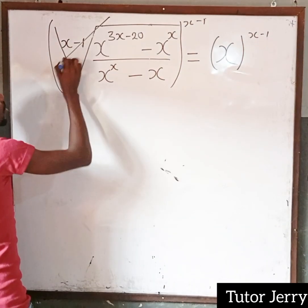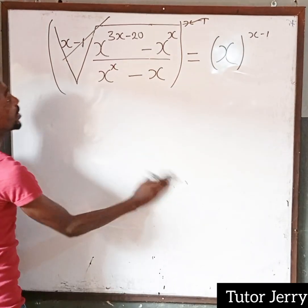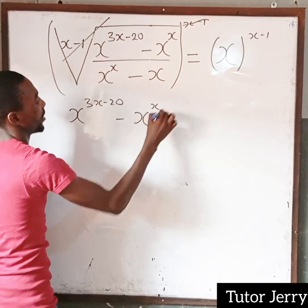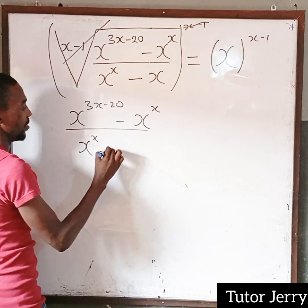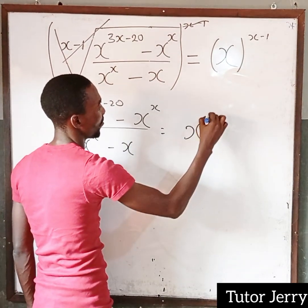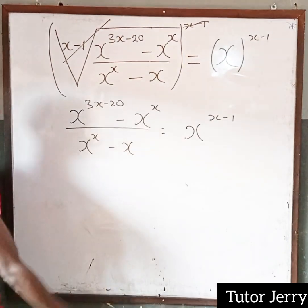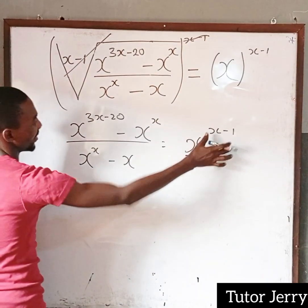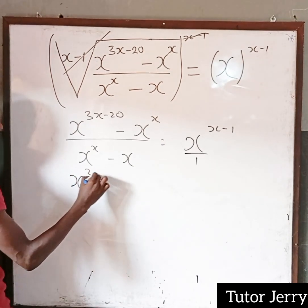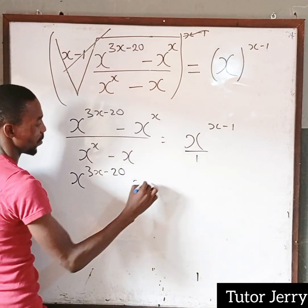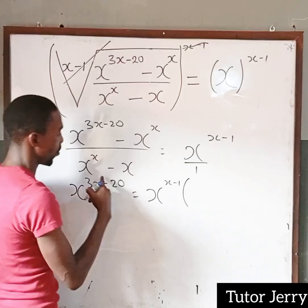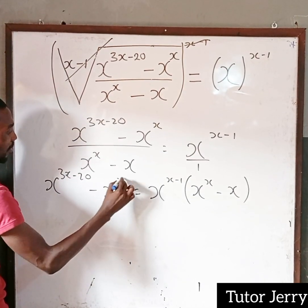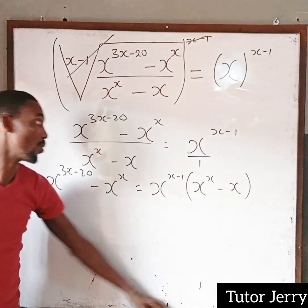x minus 1. So this cancels out. We are left with x to the power of 3x minus 20, minus x to the power of x, all over x to the power of x minus x. Now the next thing is we are going to cross multiply, keeping this to the power of 1.